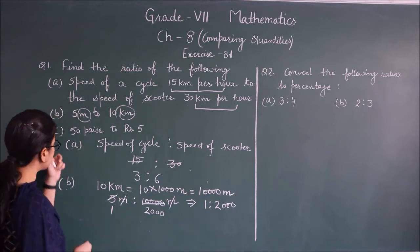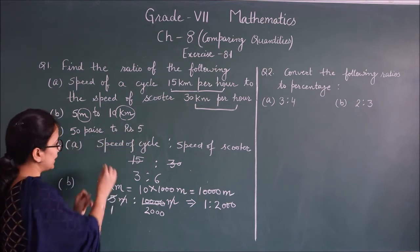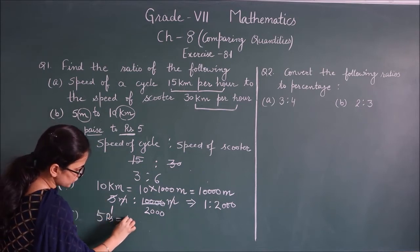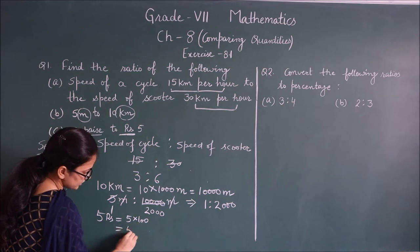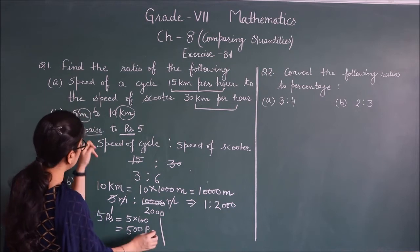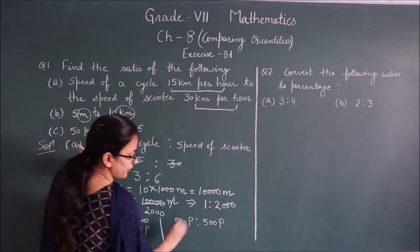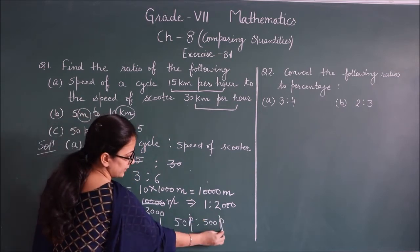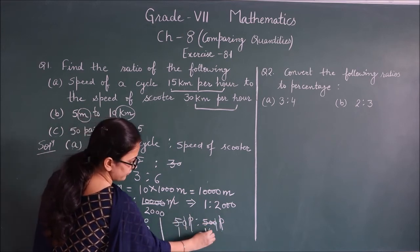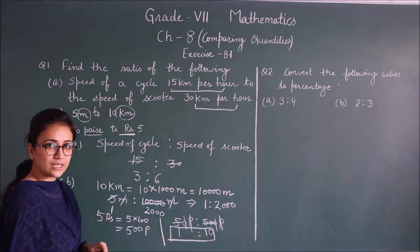Part C: 50 paise to 5 rupees. Paise and rupees are different units. Convert 5 rupees = 5 × 100 = 500 paise. Now ratio = 50 paise : 500 paise. Simplifying: 50/500 = 1/10. Required ratio is 1:10.